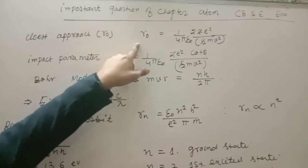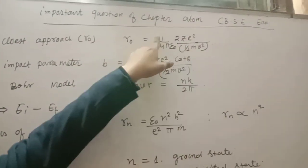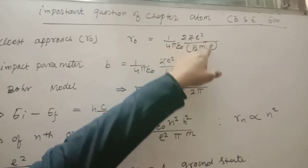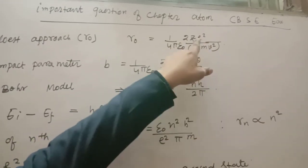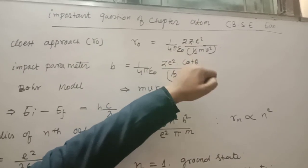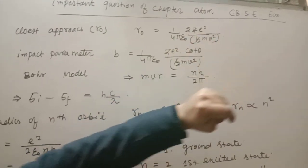The closest approach is R0 = 1 by 4π epsilon naught, 2z e square, half mv square. Z is number of protons, E is charge of electrons.